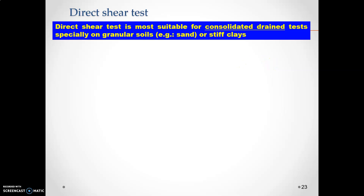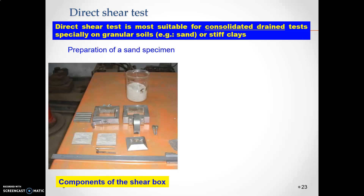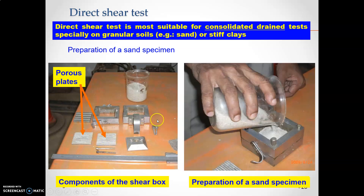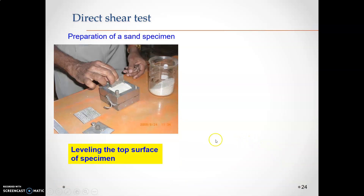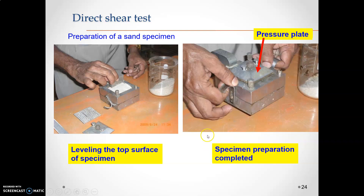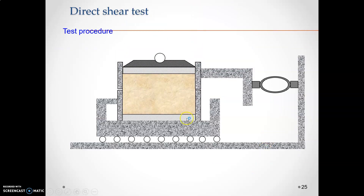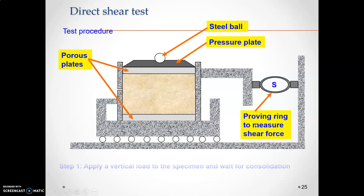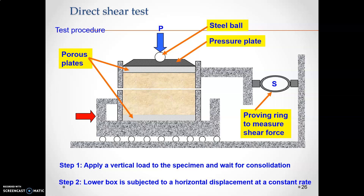The first one is the direct shear test. This is most suitable for granular soils like sand or stiff clays. There will be a box — you can see the components of the box — and this is a porous plate. This is the preparation of the sand specimen inside the box. Then the surface has to be leveled, and a pressure plate is kept on top.